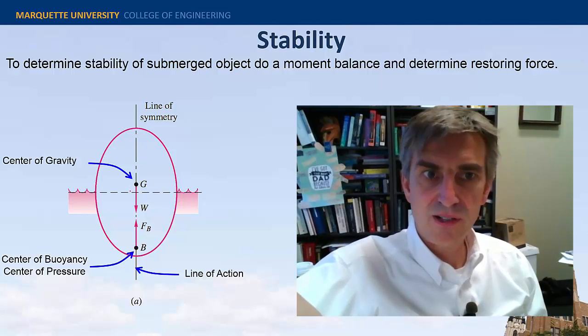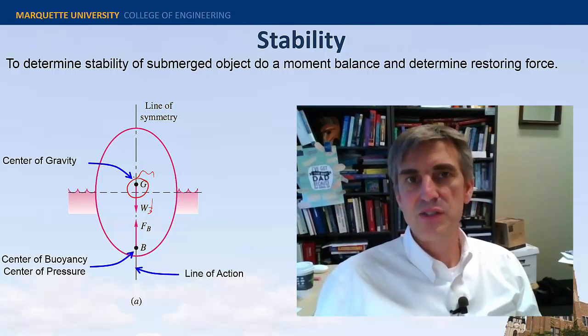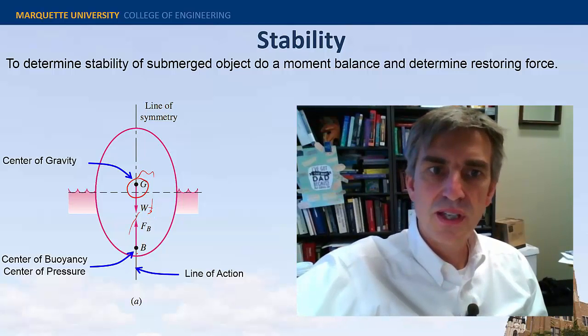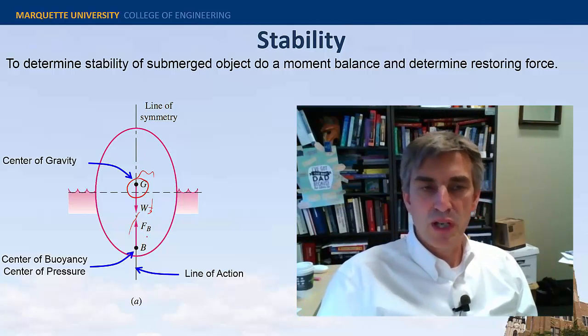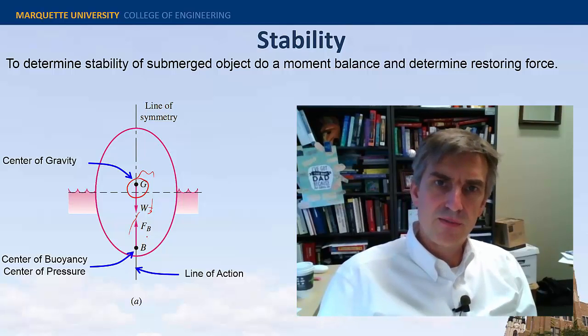Here's this object, this egg, it has a center of gravity, and its weight, W, acts about the center of gravity, in this case denoted by G. Here's the buoyancy force, which is the weight of the displaced fluid, FB, and it acts about its center of pressure, or the center of buoyancy, B, denoted in this figure.